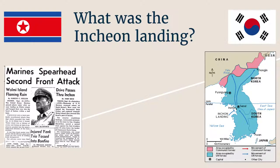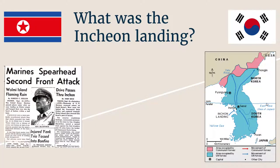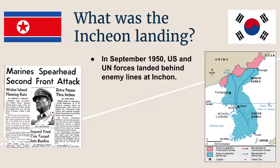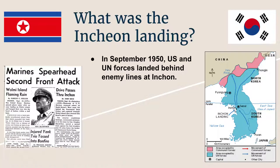There was something called the Incheon Landing. General Douglas MacArthur, a famous US general from World War II, planned what was considered his most brilliant military tactic. The Pusan perimeter was in the south, but the port of Incheon is way up north. In September 1950, US and UN forces landed behind enemy lines at Incheon — an amphibious landing, an attack from sea onto land — right near Seoul, far behind enemy lines.